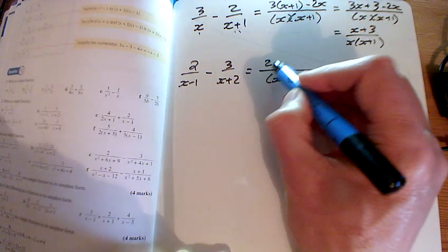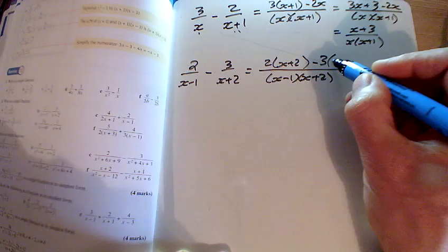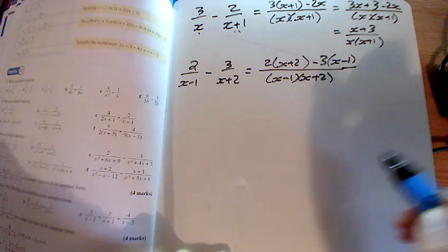We times in the top by x plus 2 on this one. And this one's been times by x minus 1, so we're times by x minus 1 again there.